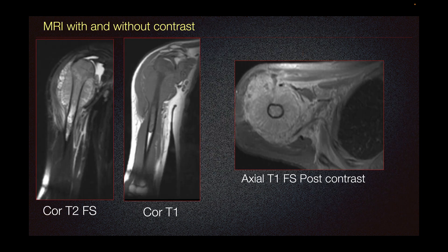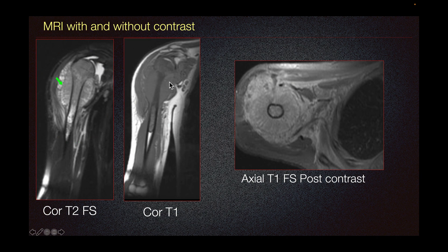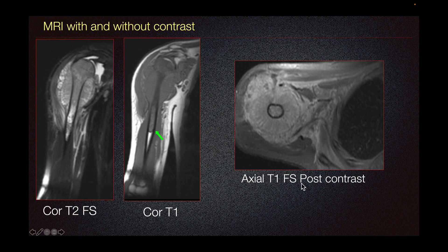On MRI with and without contrast of this patient, here on our proximal humerus, we can see a heterogeneous T2 hyperintense lesion with some soft tissue component, also seen on our coronal T1 imaging. There is bone marrow edema distally and some bone marrow signal abnormality on coronal T1. On our axial T1 fat sat post-contrast imaging, we can see heterogeneous enhancement of this lesion and also of the surrounding soft tissue, concerning for involvement.